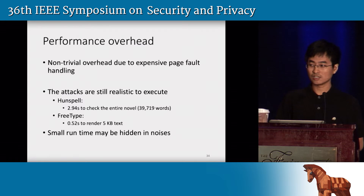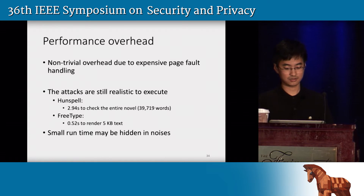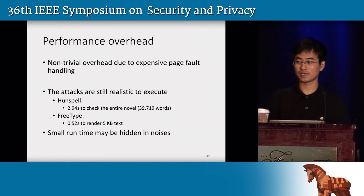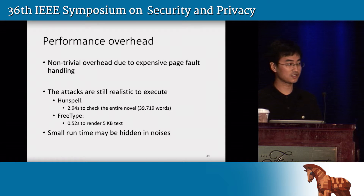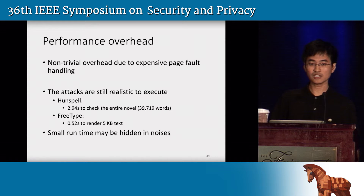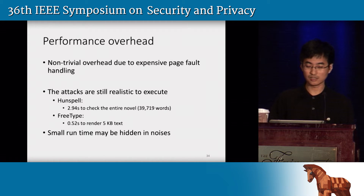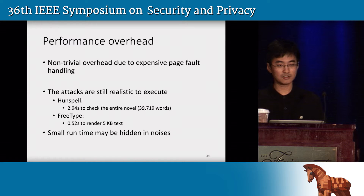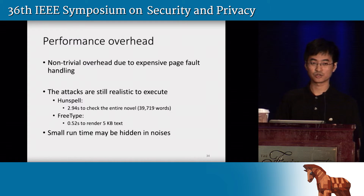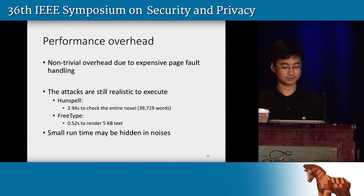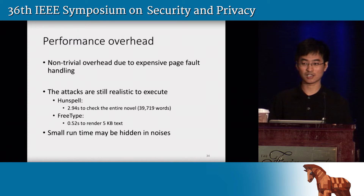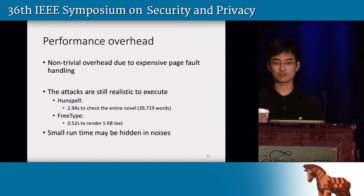Our attacks add a lot of page faults to the execution of applications, and page fault handling is expensive, especially in systems like InkTag. So our attacks have non-trivial overhead. However, they are still realistic to execute. For example, with our attack enabled, Hunspell takes less than three seconds to check the entire novel. And for FreeType, it takes less than half a second to render a five-kilobyte text file. We believe these small runtimes are sometimes unnoticeable by the user, especially in the cloud scenario where background noises are significant.